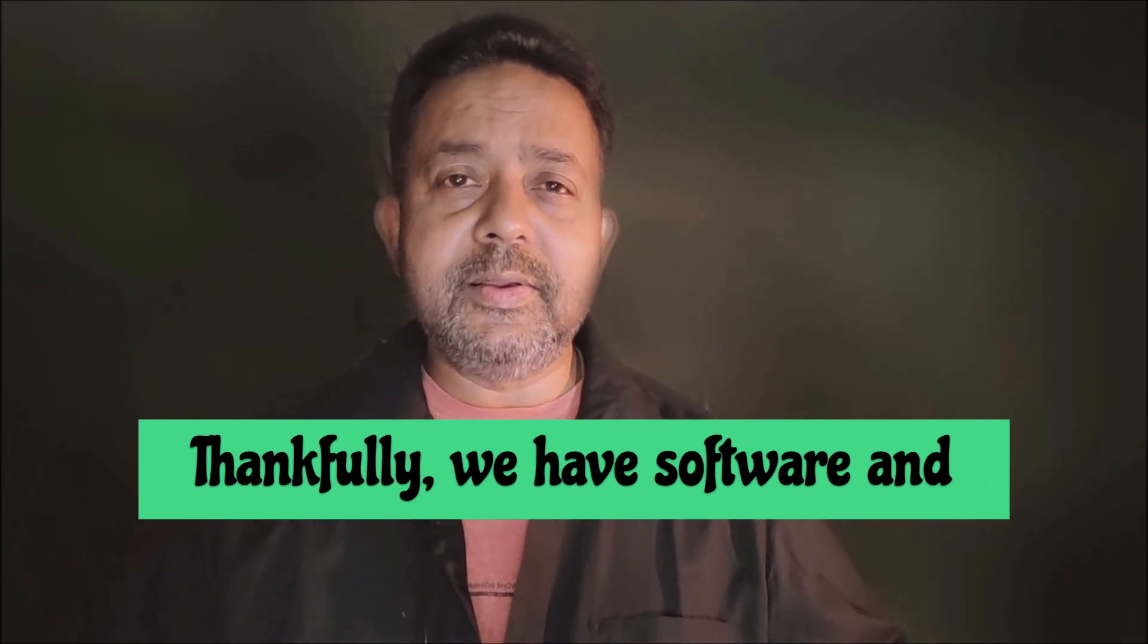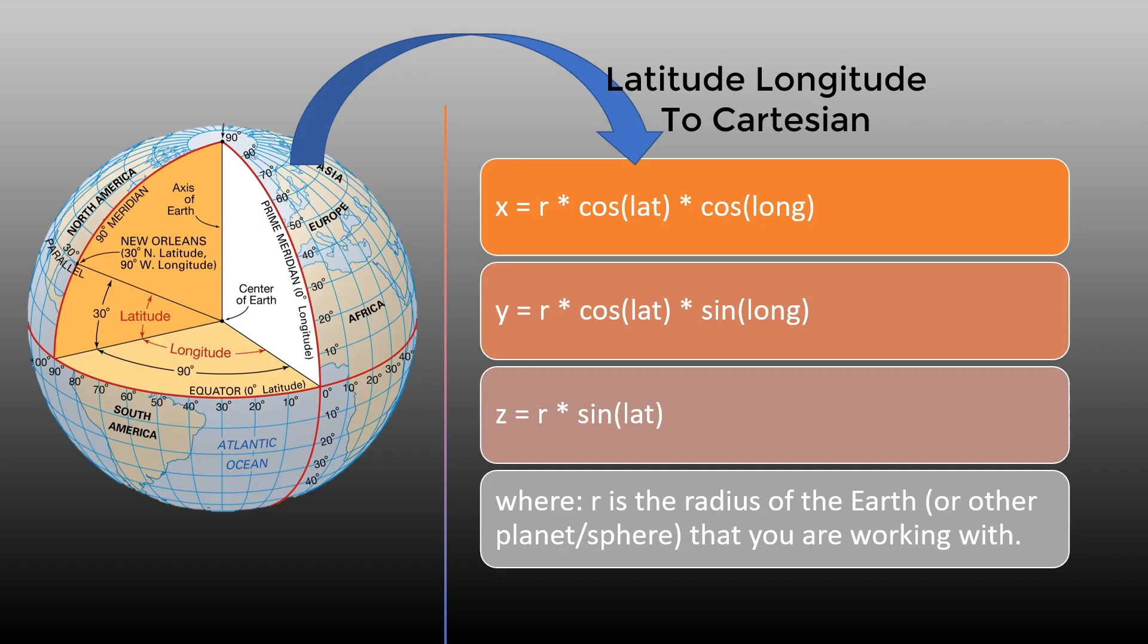Simple, right? Let's see how to do that. To convert latitude and longitude coordinates to Cartesian, you can use the following formula. Here, R is the radius of the Earth or other planetary sphere that you are working with.